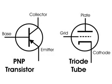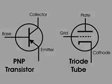Here's a closer look at the labeling of the PNP transistor and the triode. Pretty much the same as the NPN. But notice that the emitter, the arrow, is pointing in the opposite direction.